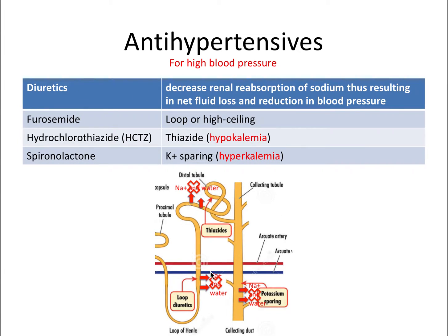Here's a snapshot of a nephron, which is a functional unit of the kidney. Each of these diuretics accomplishes basically the same goal but in different regions of the nephron. Furosemide is a loop diuretic that acts in the loop of Henle. Hydrochlorothiazide is a thiazide diuretic that acts in the distal tubule. And spironolactone is a potassium-sparing diuretic that acts in the collecting duct at the end of the nephron.